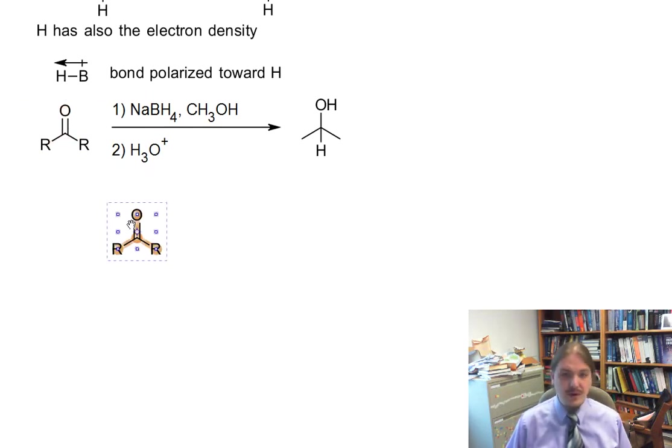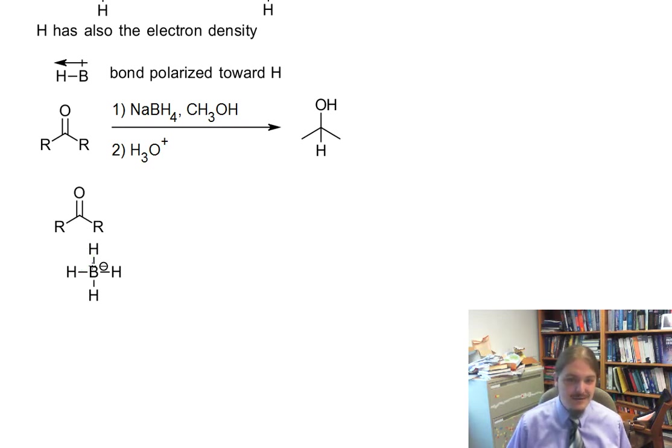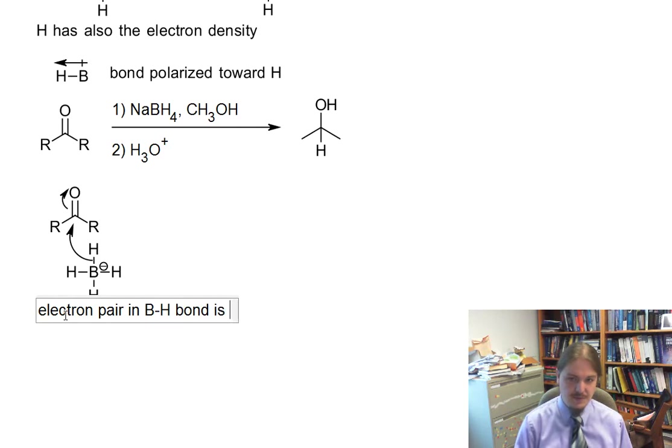So the way the borohydride anion and the aluminum hydride anion behaves the same way, donates a hydride or transfers a hydride, if you will, as a nucleophile, involves one of the boron-hydrogen bonds acting as a nucleophile. And it's actually the electron pair in the boron-hydrogen bond that is being the nucleophile.